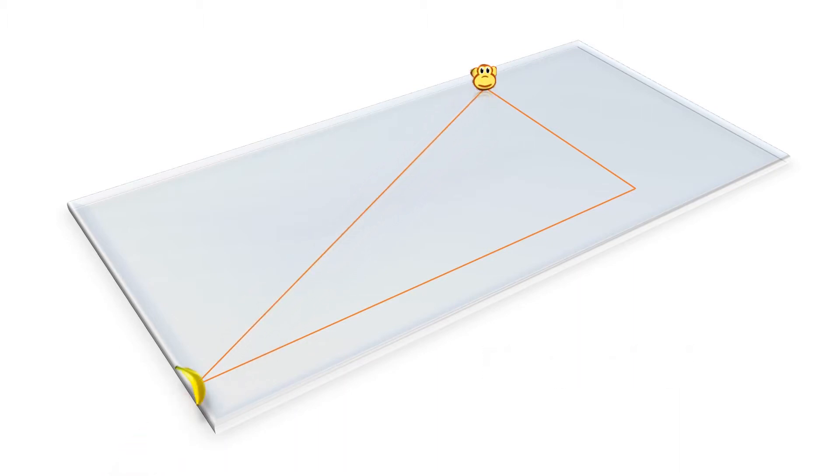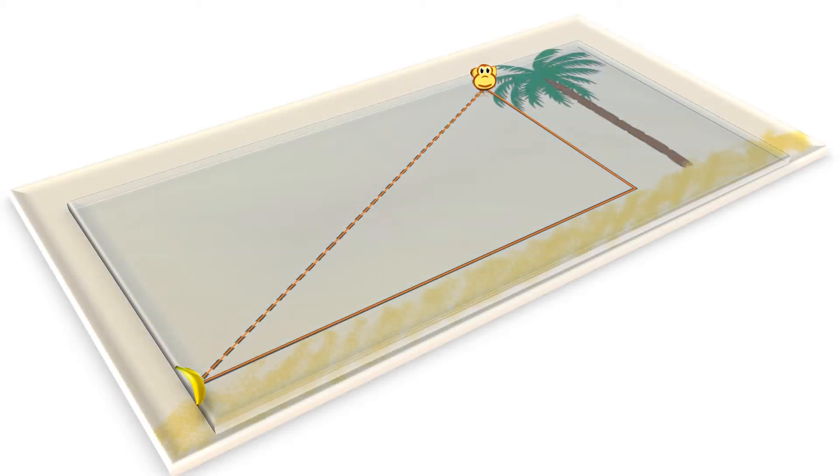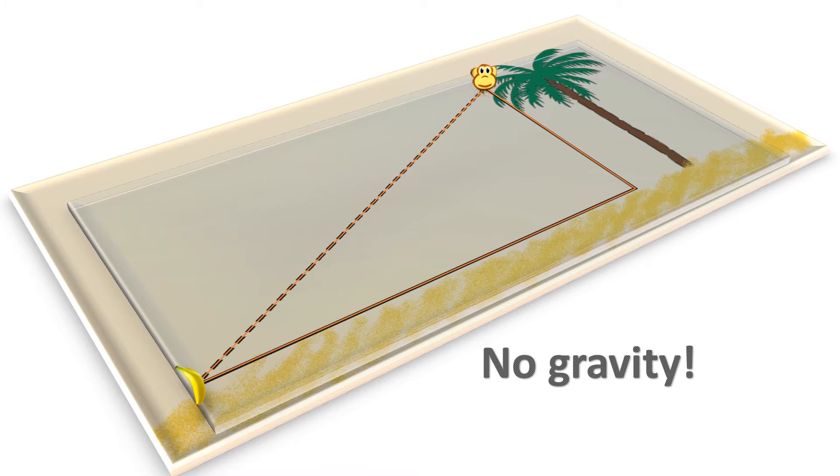Let's repeat this, but now we will add the world on a plate under the first plate. We painted the tree and the ground on the lower plate. Since there is no gravity to affect the movements, the banana will fly again along a straight line, hitting the monkey.